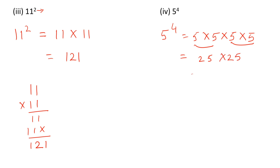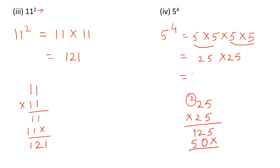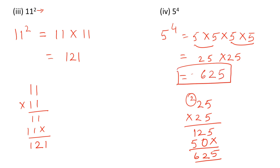Now do 25 times 25: 5 times 5 is 25, carry 2; 5 times 2 is 10, plus 2 is 12; then 2 times 25 is 50. The answer is 625. So it is very simple — see what is the base and multiply it that many times as the number of the exponent.